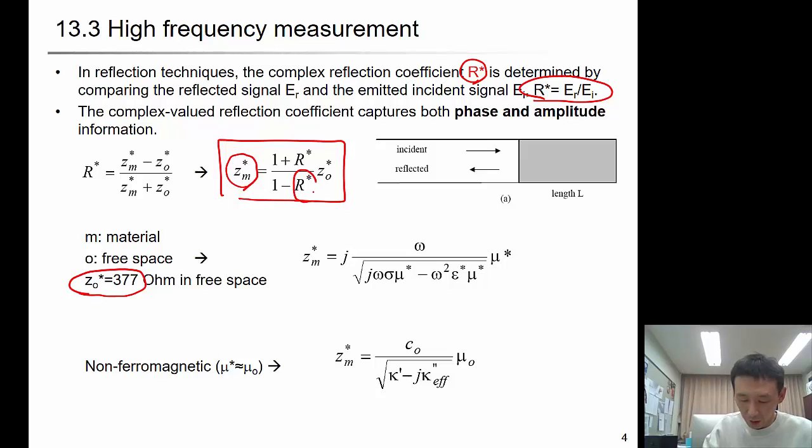If you measure R*, the reflection coefficient, then you can identify Zm. Once you get the impedance, the complex impedance of the material, then using this equation, you can identify mu and epsilon*, which is the complex permittivity. If it's non-ferromagnetic, this mu value will go to 1, so the equation becomes more simple.